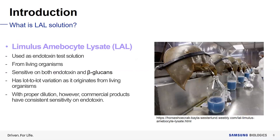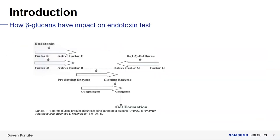For endotoxin testing, Limulus Amebocyte Lysate — LAL solution — is widely used. The blue liquid shown is the blood of the horseshoe crab, and LAL solution is made using this blood. LAL solution is not only sensitive to endotoxin but can also react with beta-glucans. However, because it is derived from living organisms, there is significant variation in the sensitivity to both endotoxin and beta-glucans. To be commercialized, the product needs proper dilution for consistent endotoxin sensitivity.